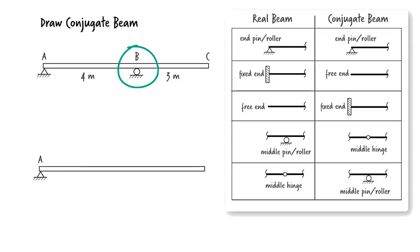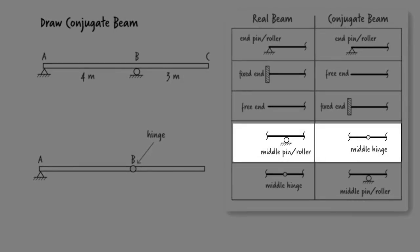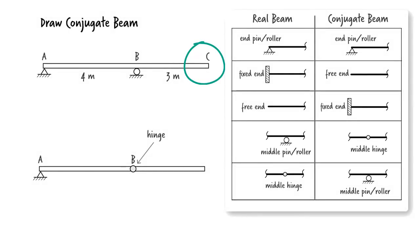The roller at B turns into an internal hinge, and the free end at C becomes a fixed support in the conjugate beam.